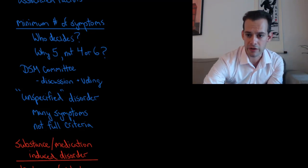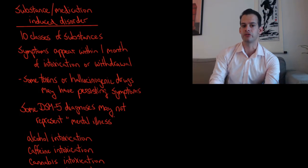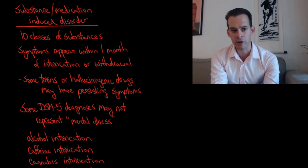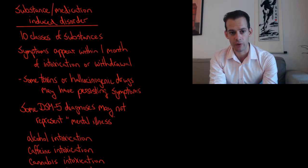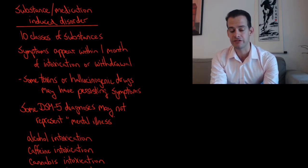Another thing that's worth noting about the DSM-5 before we get to particular disorders is it also includes what are called substance or medication induced disorders. And so the DSM-5 recognizes that there are 10 classes of substances that are known to cause symptoms that might appear to be symptoms of mental illness.